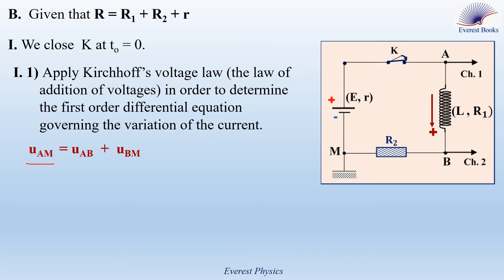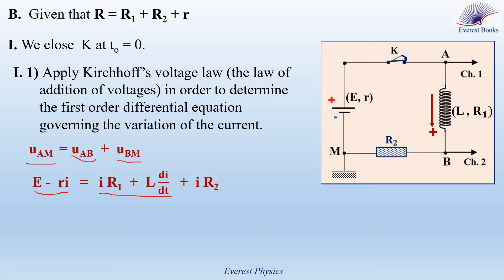UAM is the voltage across the battery having internal resistance r, so UAM equals E minus rI. UAB is the voltage across the coil, and the positive sense is oriented from A to B through the coil, so UAB equals IR1 plus L dI/dt. UBM is the voltage across the resistor of resistance R2, and the positive sense is oriented from B to M, so UBM equals I times R2.